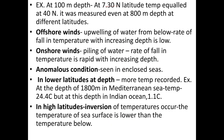At 100 meters depth at 7.3 degrees north latitude, temperature equaled that measured at 40 degrees north even at 800 meters depth, showing that at depth the temperature is constantly similar whether measured at the equator or the poles. On the surface, temperature varies much more. Offshore winds cause upwelling of water from below, so the rate of falling temperature with increasing depth is low. With onshore winds, piling of water takes place and the rate of falling temperature is more rapid with increasing depth.